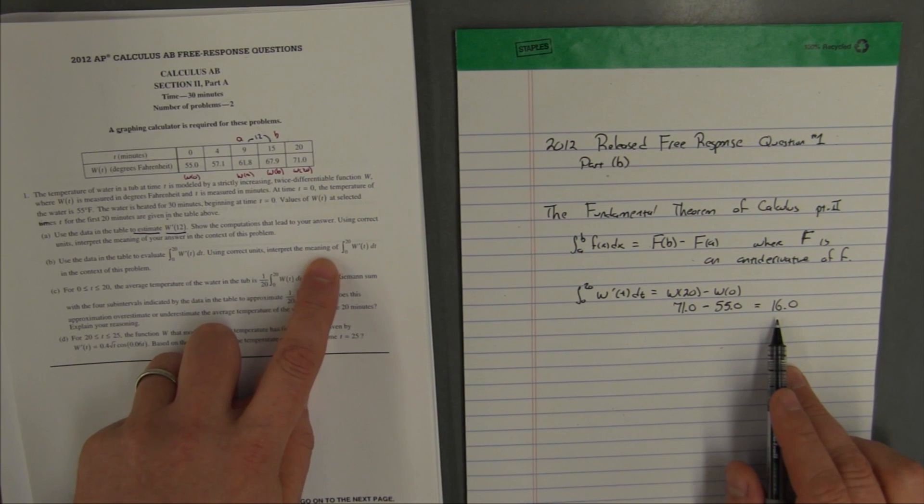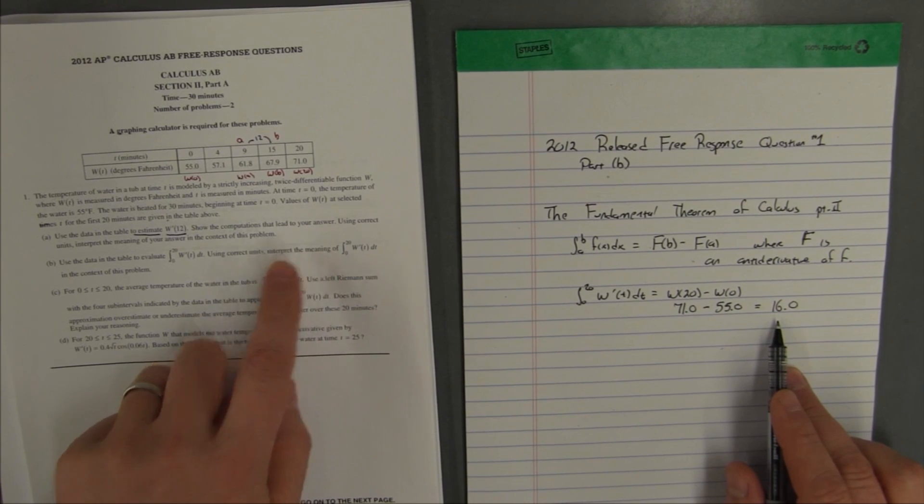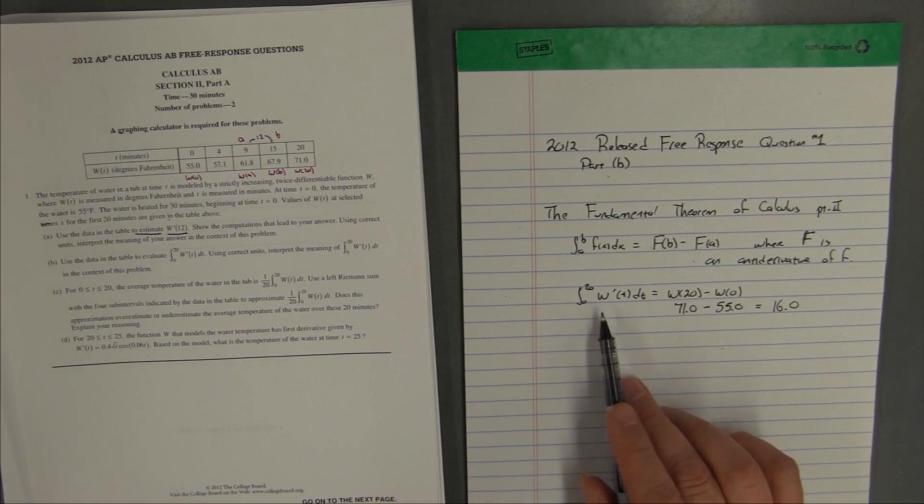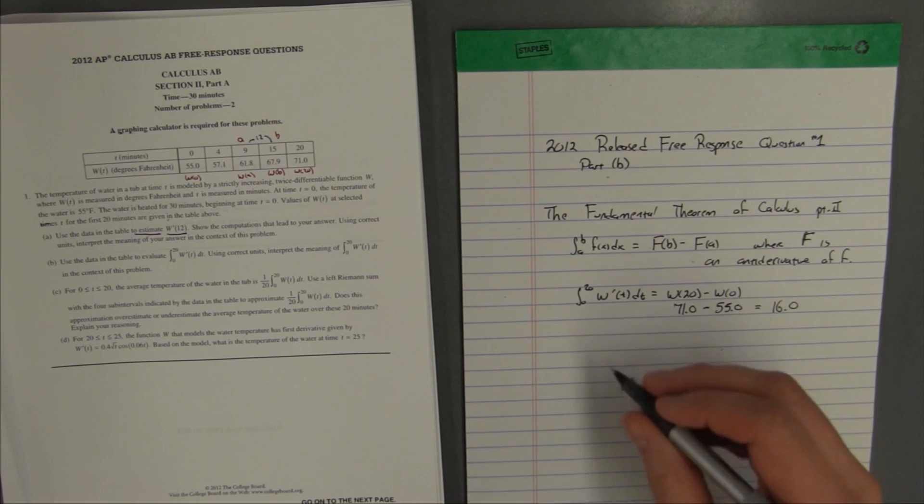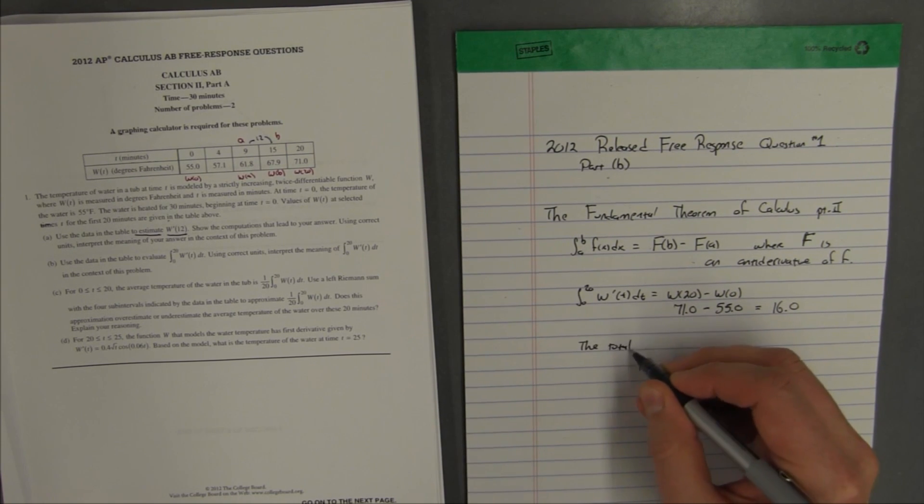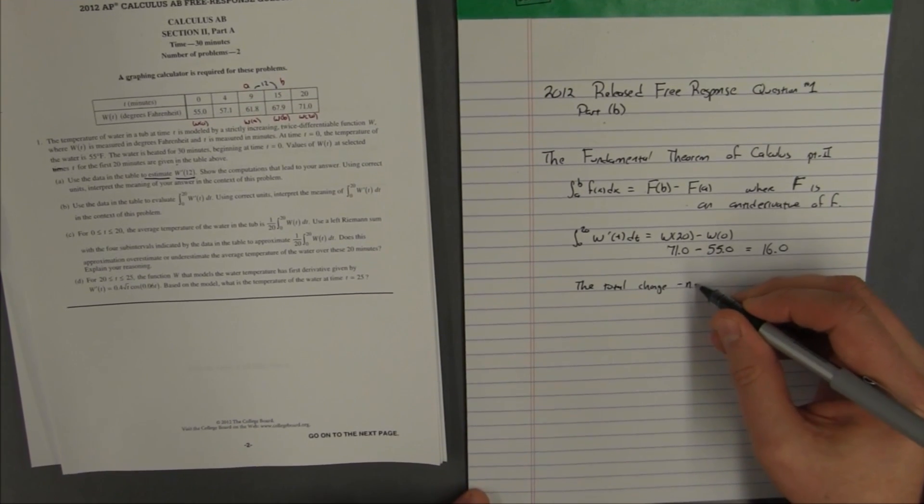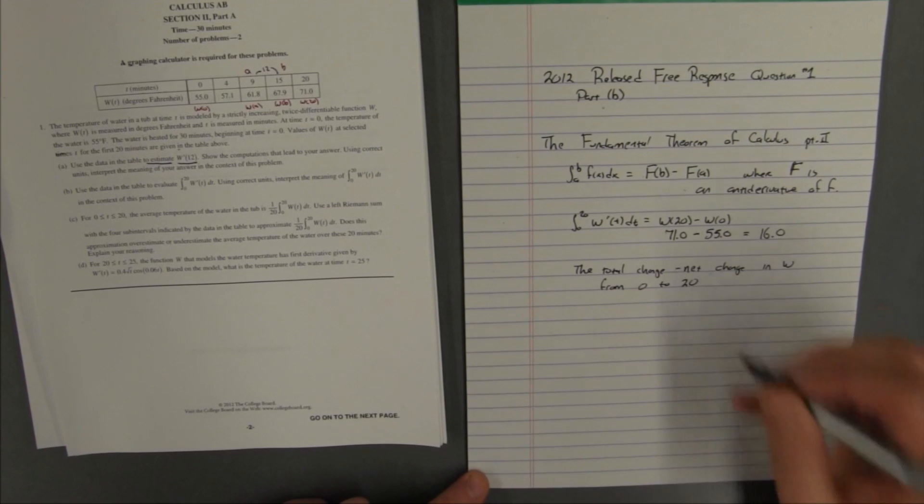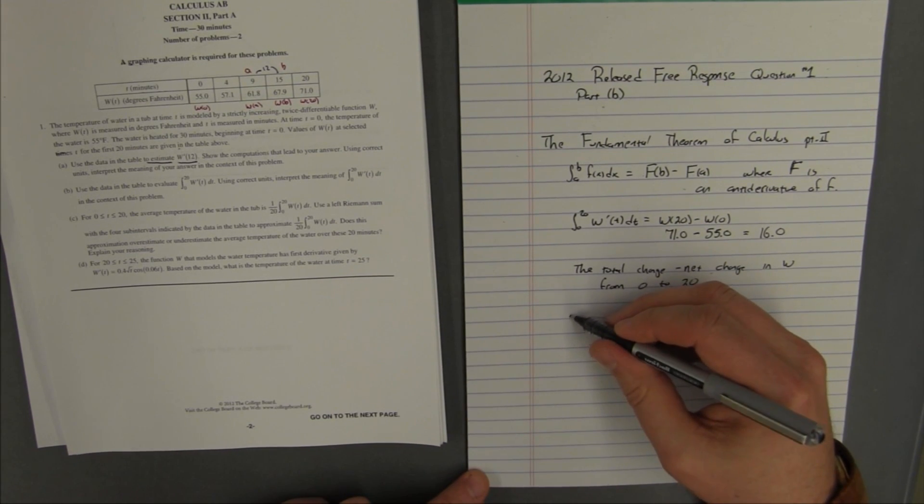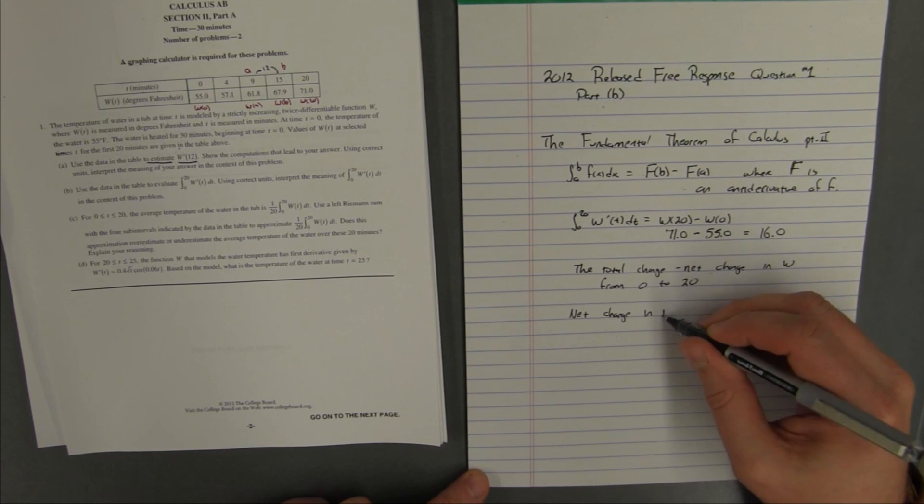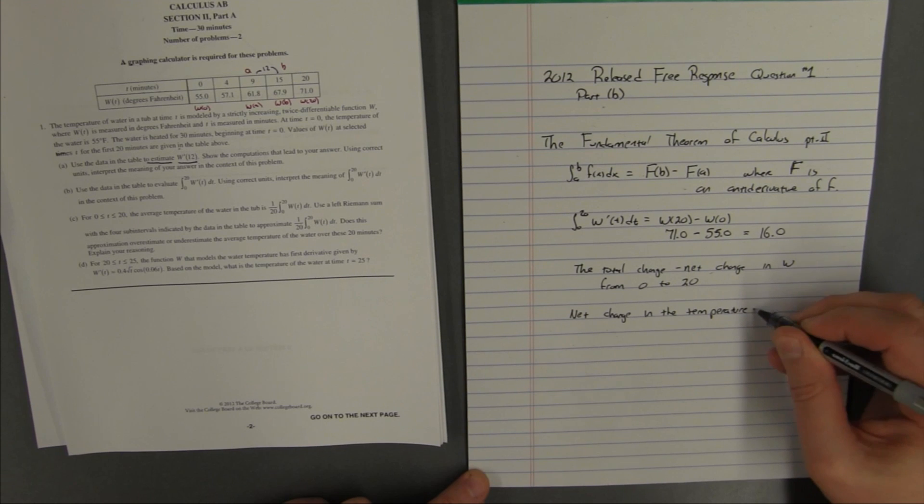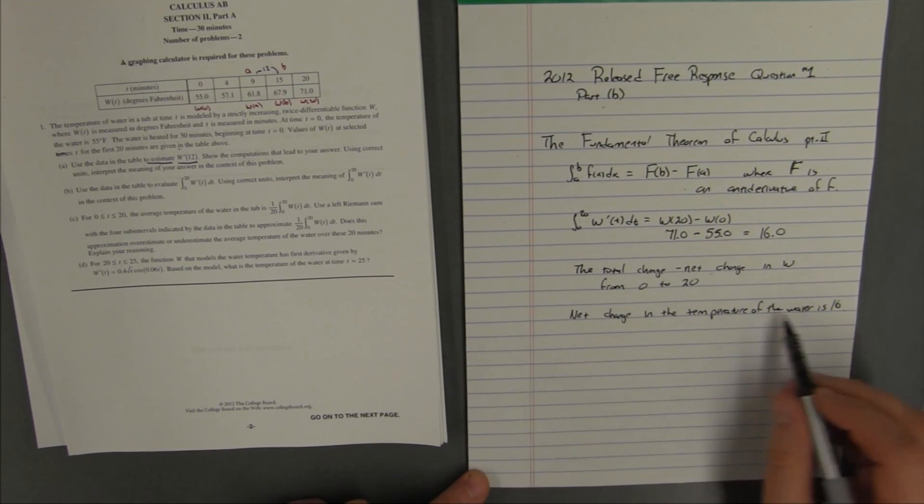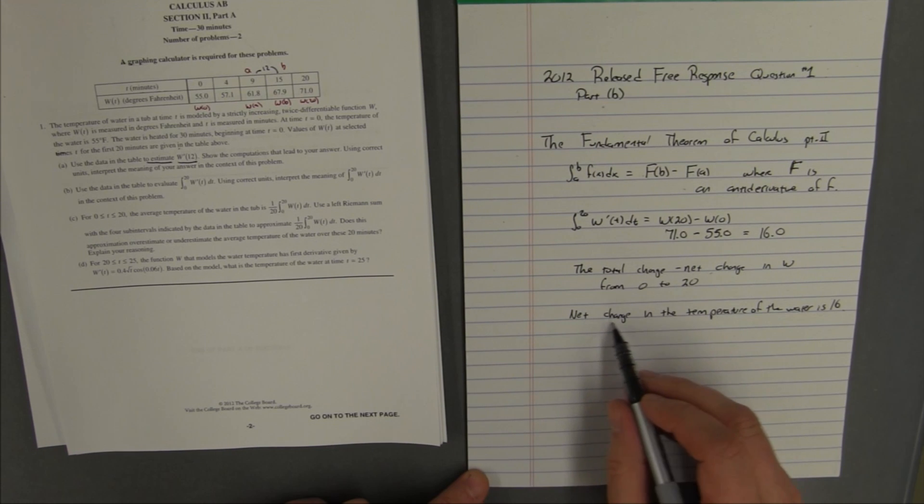Now using correct units, we need to interpret the meaning just like we did in part a. We need to interpret the meaning of this. What does it mean in the context of the problem? Well, when I do the integral of the rate of change, what I get is the accumulation. It's the total amount of change. So, what I have is the total change or the net change. The net change in w from 0 to 20. So, that means what I'm really looking at is the net change in the temperature of the water is 16.